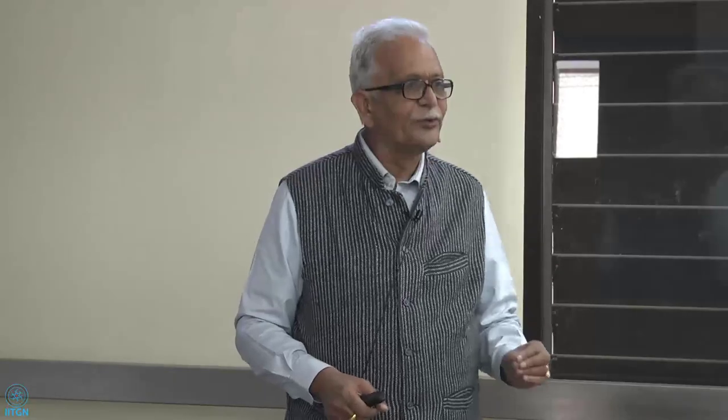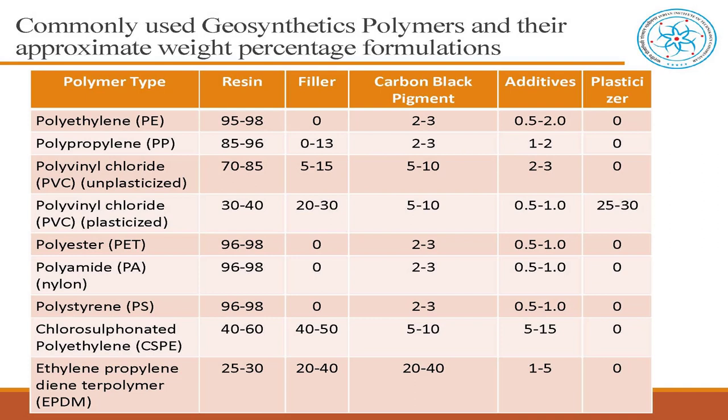What polymers are used? The list is long: polyethylene, polypropylene (PP), PVC (polyvinyl chloride), polyamide, CSPE, EPDM, and polyester (PET). You should remember that when you see PP it means polypropylene. We should have working knowledge of polymer chemistry. When you say polyester or PET, there is a basic resin and something called an additive — plasticizer and carbon black pigment.